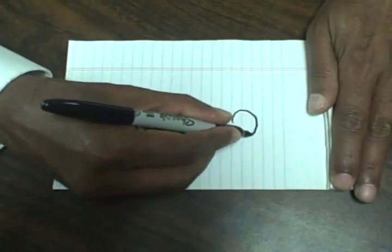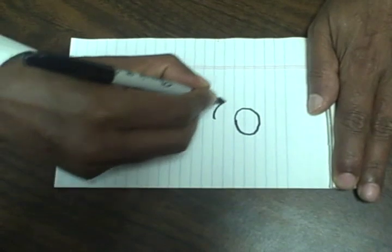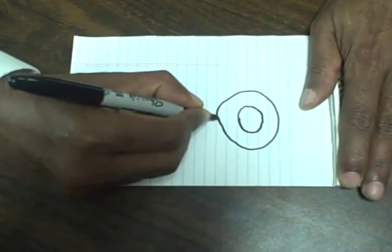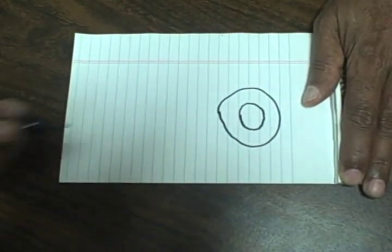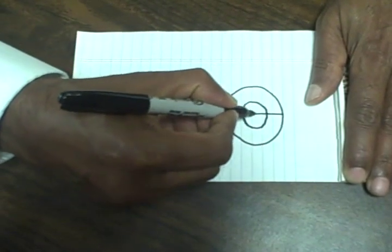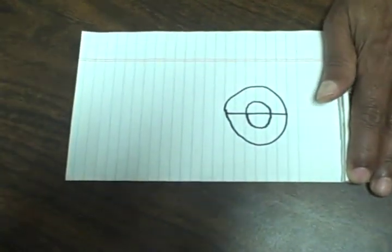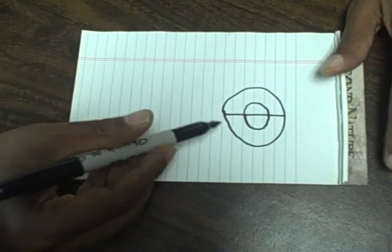You begin by drawing two concentric circles like this. Maybe you can do a better job. And then a line which cuts across. Here is the task.